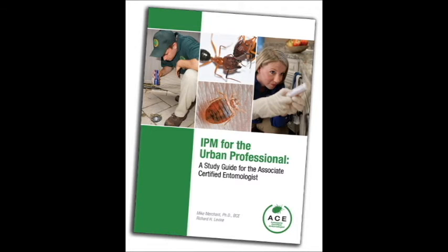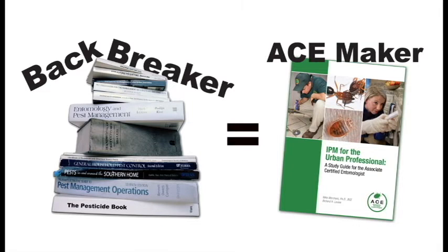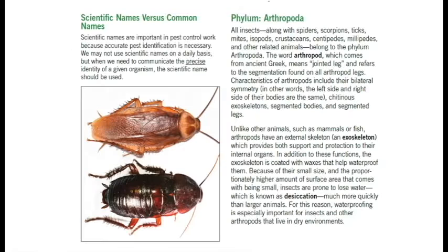But not anymore. IPM for the Urban Professional, a study guide for the Associate Certified Entomologist, turns material that used to be a backbreaker into an ACE maker.